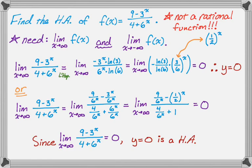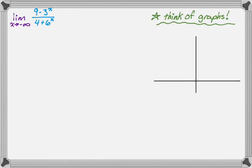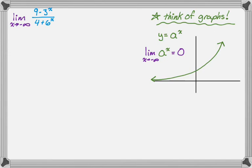Something different could happen as we go to negative infinity, so let's figure out that limit. When I look at this, I think about what the graph looks like. For y = a^x, a generic exponential is always increasing. The key limits are: as x→-∞, a^x → 0 (because of the horizontal asymptote), and as x→+∞, a^x → ∞.